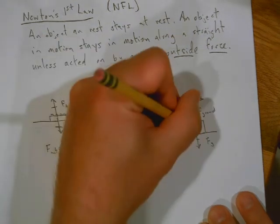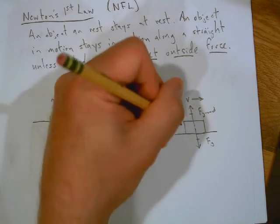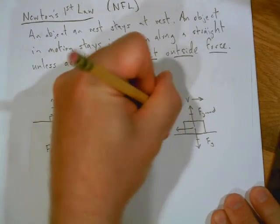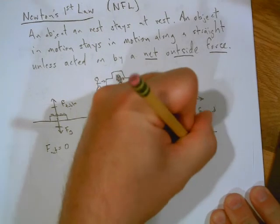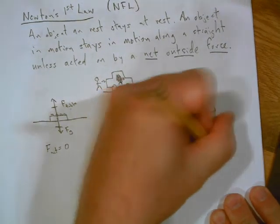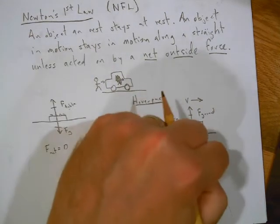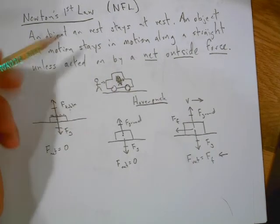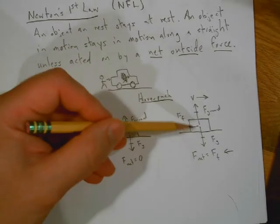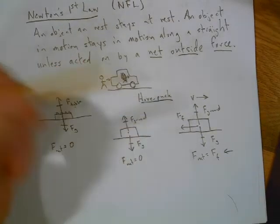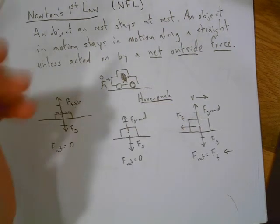And then, what was there? Oh yeah, there was friction acting on it. Which way was the friction going? Well, friction always goes against the motion. So in this case, the friction was pointing this way. So my net force was equal to the force of friction pointing this way. And guess what, if the net force is not zero, because that's what it says up here, unless acted on by a net outside force, well, this thing was in motion. Why did it not stay in motion? Because there was a net outside force acting on it.